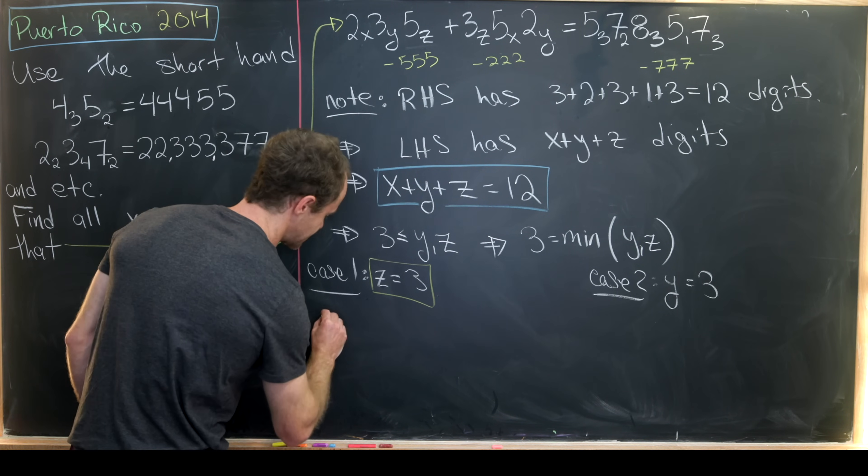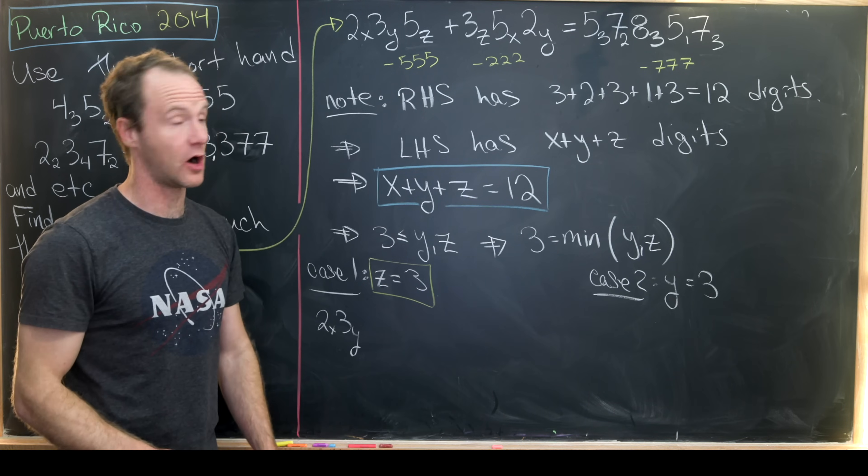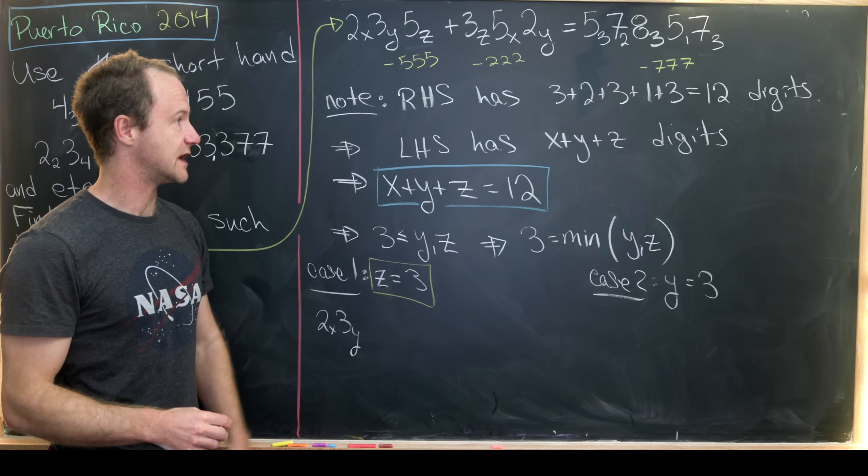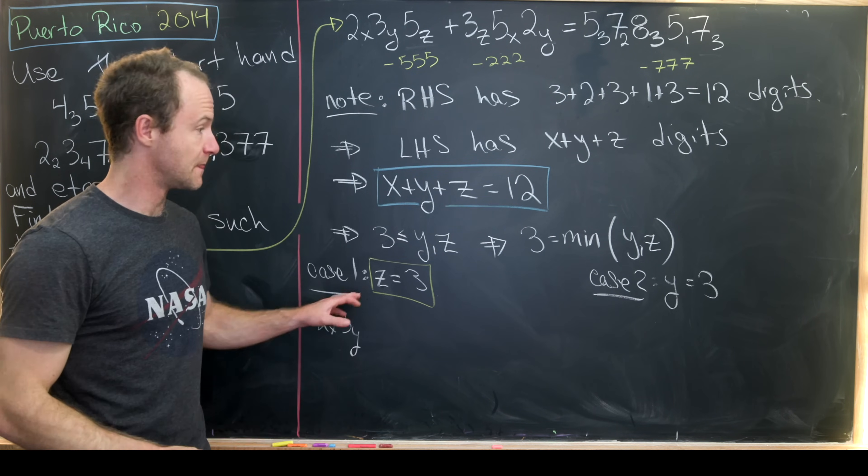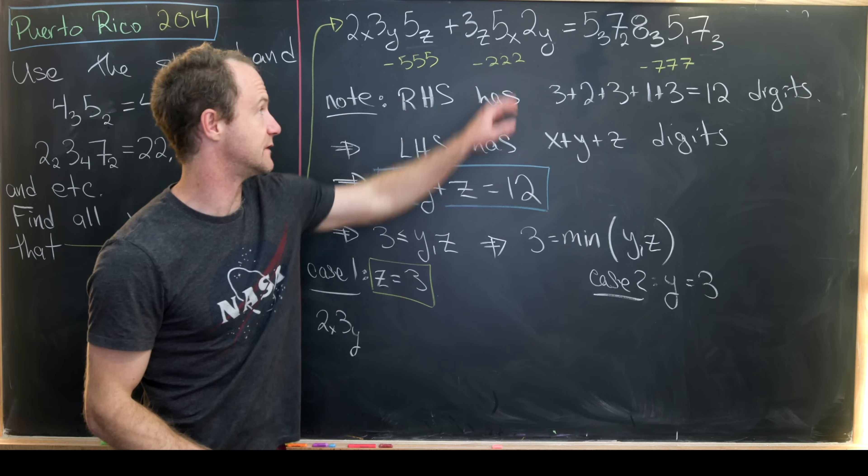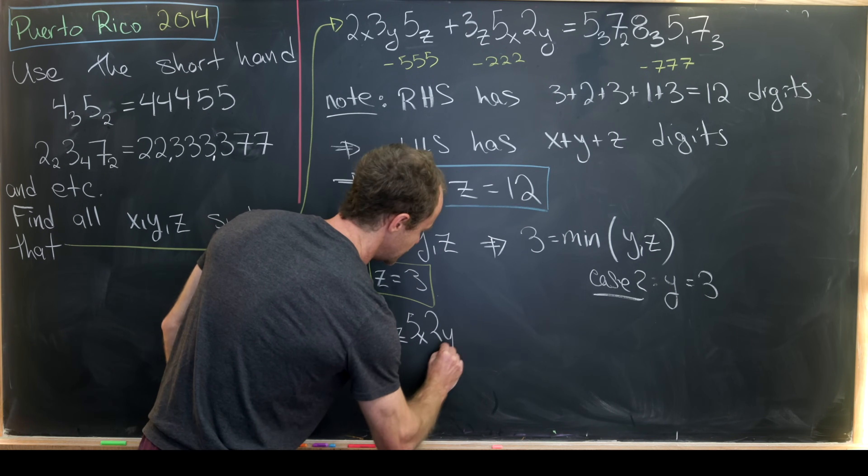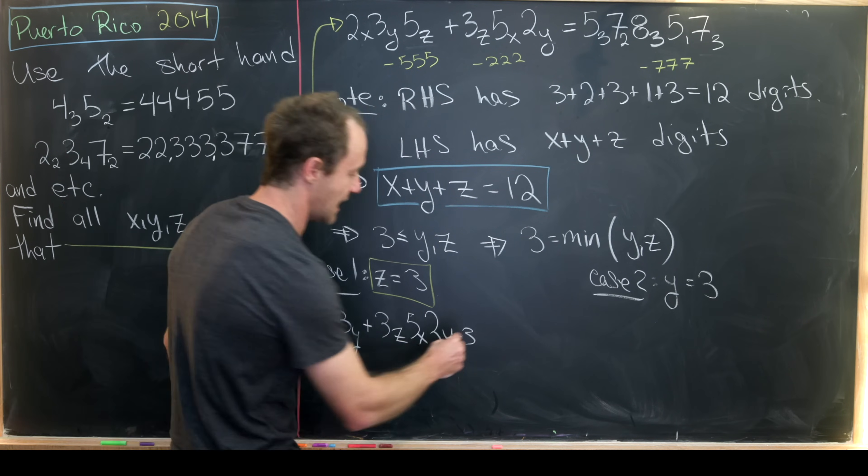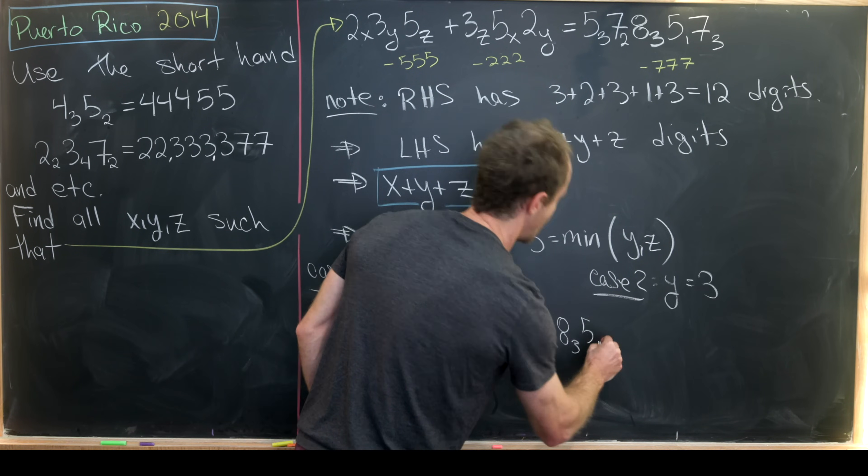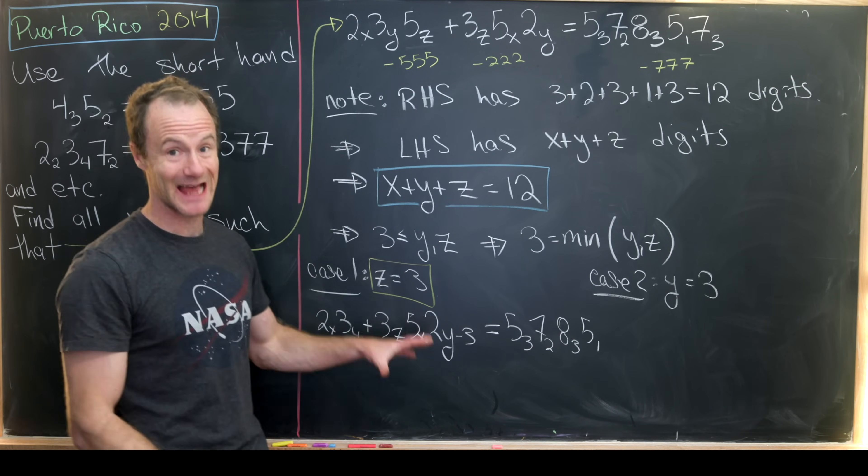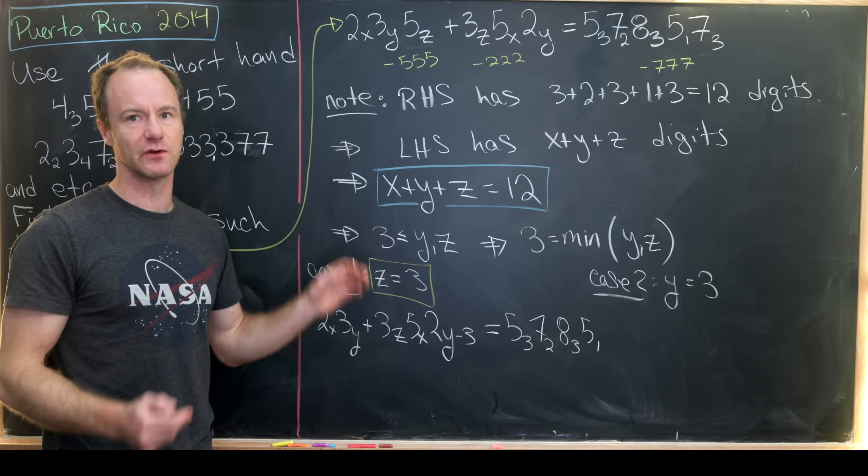Subtracting 555 from this will give us 2 sub x, 3 sub y, and then we'll have three zeros. We'll actually have three zeros at the end of all of these numbers so we can just divide by a thousand. After subtracting 222 from here we'll be left with some twos, but the number of twos we'll be left with is y minus three because we've subtracted off three of them. So this is going to be plus 3 sub z, 5 sub x, and then 2 sub y minus 3. On the right-hand side of the equation we'll have 5 sub 3, 7 sub 2, 8 sub 3, and then 5 sub 1. I just want to reiterate that this is not exactly what happens after we subtract these numbers. This is what happens after we subtract these numbers and then clear the zeros that are left over.